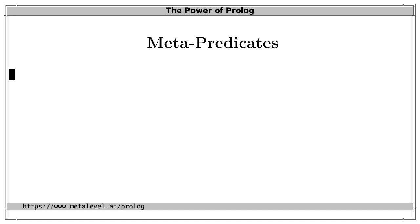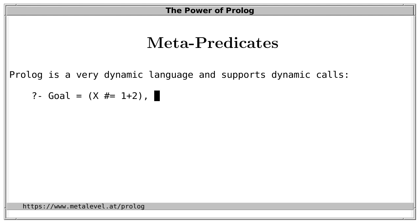Prolog supports metapredicates. What is a metapredicate? First consider this interaction. We state here that goal is a certain Prolog term and then we post the goal dynamically. This means that the goal only becomes known at runtime, that is only when the query is actually posted. And when we do post this we see that the goal is actually called because x is now 3 which is the result of 1 plus 2.